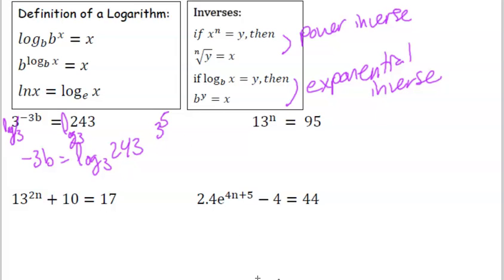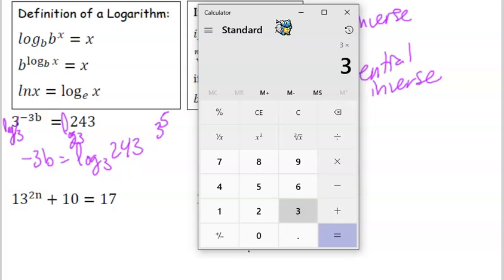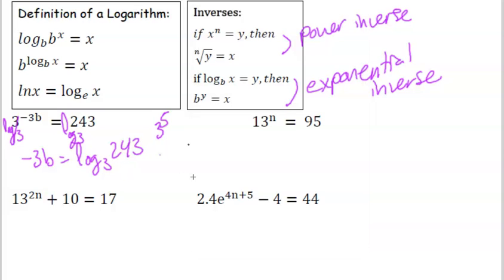Let's see. 3 to the fifth power. Let's double check that. So 3, 3, that's 243. Okay, that's 5 times. So we have negative 3b equals 5. Divide by negative 3. And so we have b equals negative 5 thirds.